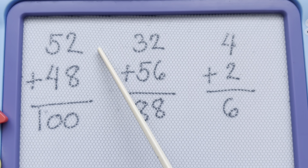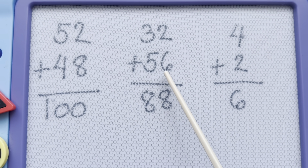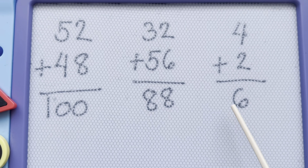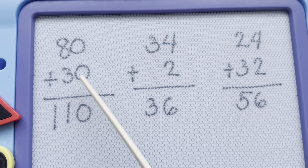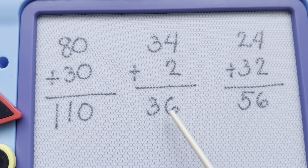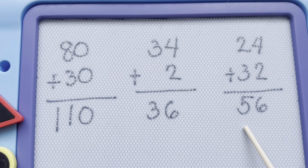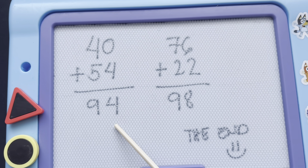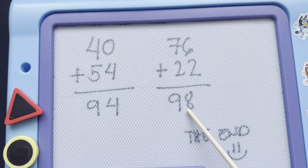Here's another number. 52 plus 48 is equals to 100. 32 plus 56 is equals to 88. 4 plus 2 is equals to 6. Let's add more numbers. 80 plus 30 is equals to 110. 34 plus 2 is equals to 36. 24 plus 32 is equals to 56. 46 plus 54 is equals to 94. 76 plus 22 is equals to 98.